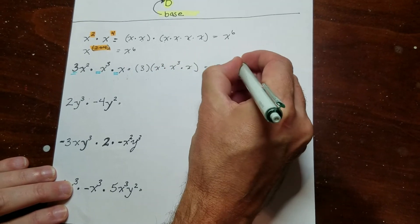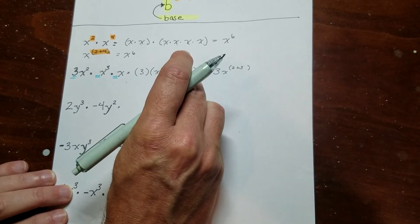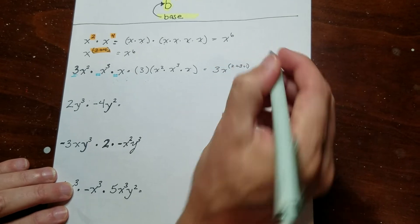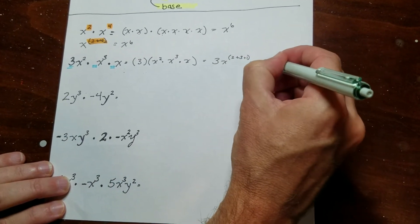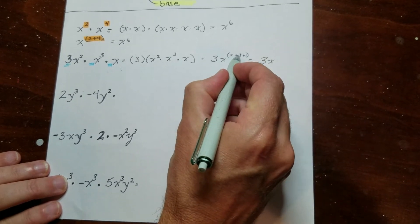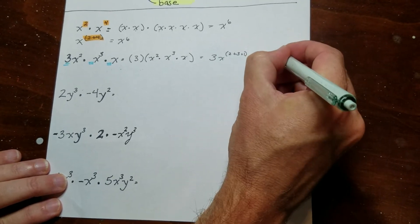So I've got two of them here. I'm going to add that to the 3. And then this doesn't have an exponent, but that means it has 1. So then what's going to happen is I have 3x, and this is 2 plus 3, which is 5 plus 1, which is 6.